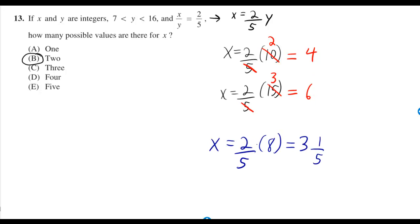If you do 2 fifths of 8, you get 3 and 1 fifth. If you do any of the numbers between 7 and 16, then only numbers that are multiples of 5 are going to give you integers when you multiply by 2 fifths.